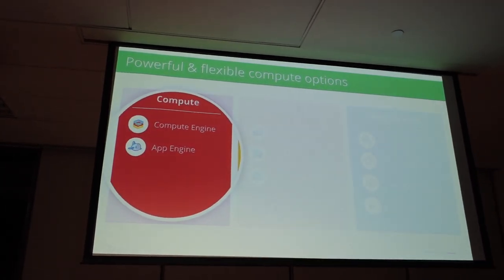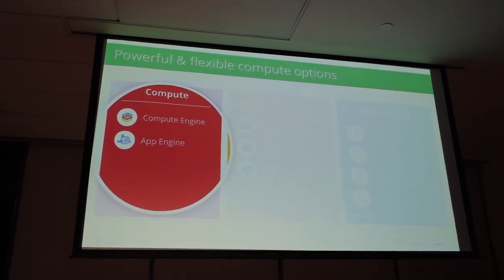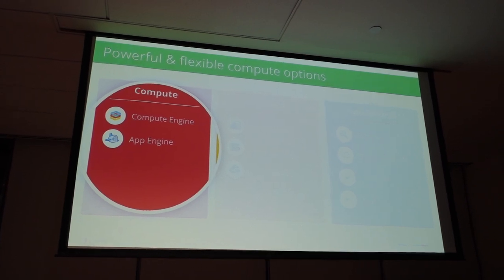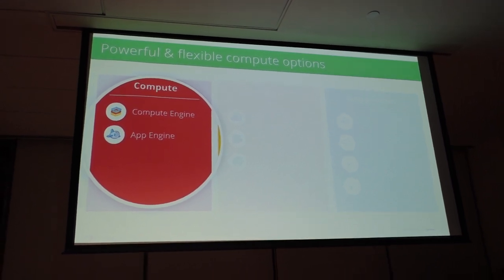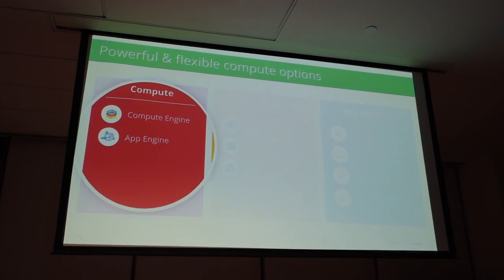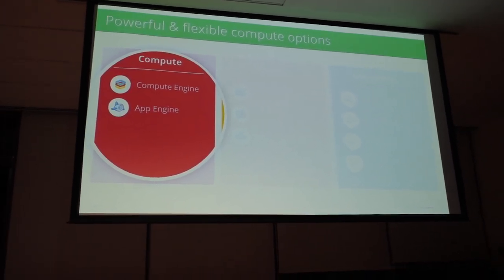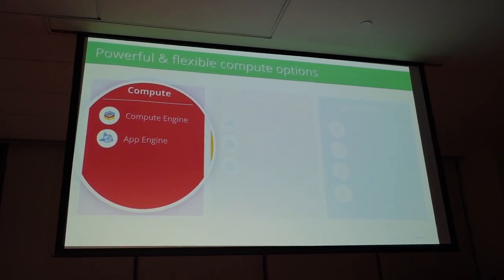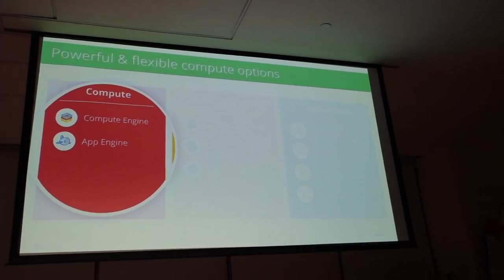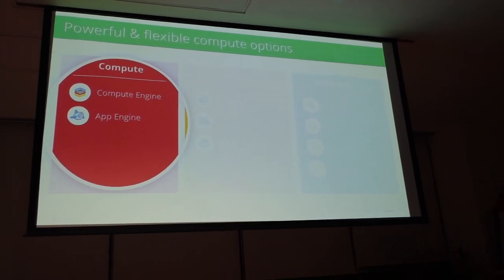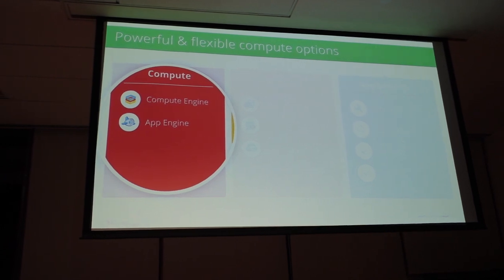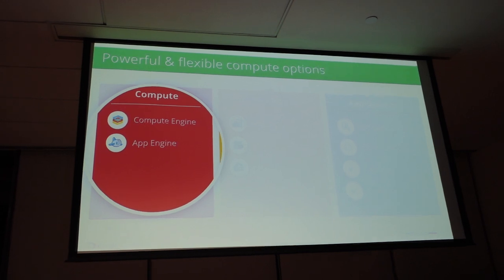In terms of compute, we have three services. We have Compute Engine for infrastructure as a service — basically virtual machines connected by a global private network, so a VM in Asia and another VM in America can talk to each other as though they are on a local network. For App Engine, this is our platform as a service, so all you care about is writing your code and your application, and you leave everything else to us. We handle all scaling — you just indicate your desired response time, and when response time exceeds that, App Engine automatically spins up new instances.